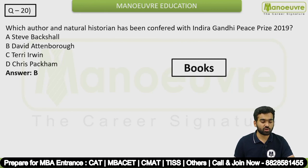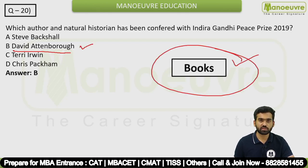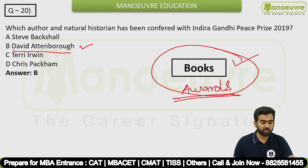Question 20: Which author and natural historian has been conferred with the Indira Gandhi Peace Prize 2019? The answer is option B — David Attenborough. This is an awards-related question, though it can also be categorized under books and authors.